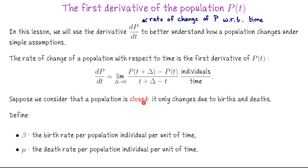We say a population is closed if it only changes due to births and deaths. There's no immigration or harvesting or anything like that. So what we're looking at here is the rate of change of a population with respect to time, which is the first derivative of the function p of t — that's p prime of t, or equivalently dp/dt.